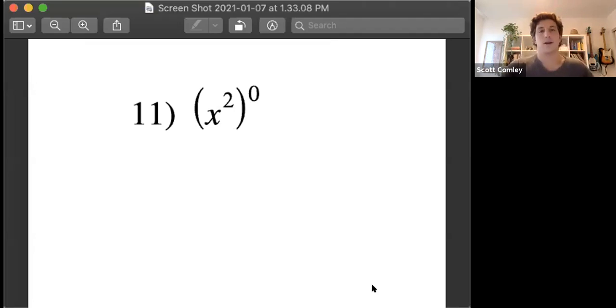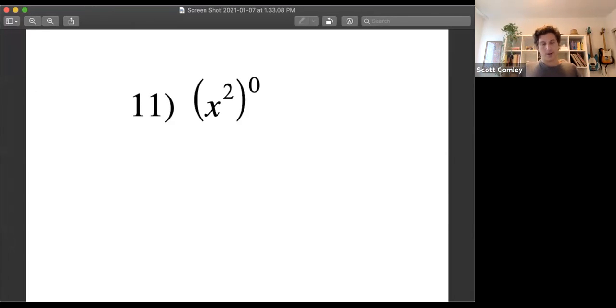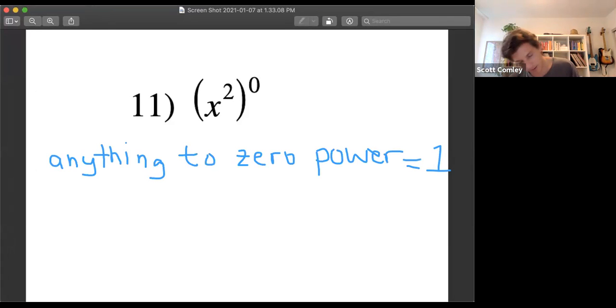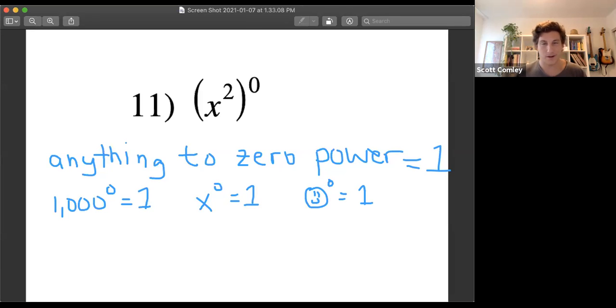This one is going to involve something to the zero power. Hopefully you've heard anything to the zero, anything to zero power equal to one, like 1000 to the zero power is one, x to the zero power is one. Happy face to the zero power is one. A variable can be something in place of a number.